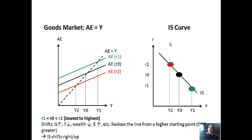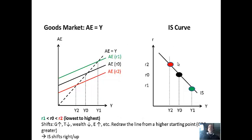If we redraw the IS curve with higher GDP — for example with higher government spending — we'd be shifted to the right. So higher government spending leads to a rightward shift in the IS curve. Government spending increases, tax decreases, wealth decreases, and exchange rate depreciations — all of these lead to higher production now and a rightward shift in the IS curve.